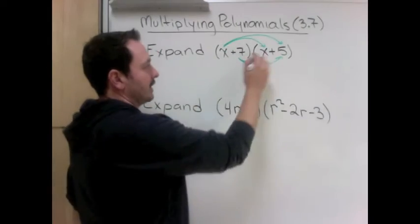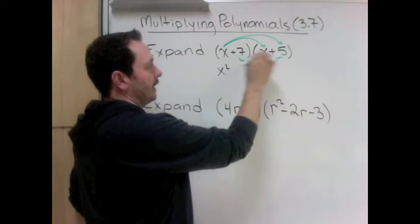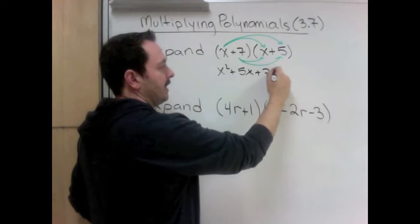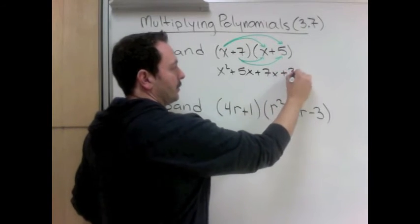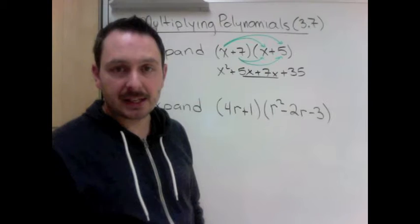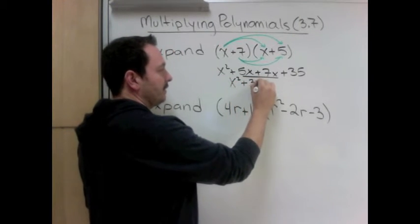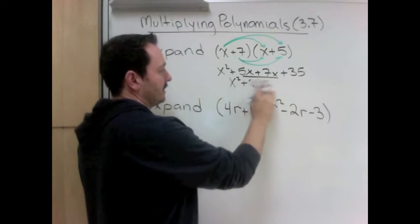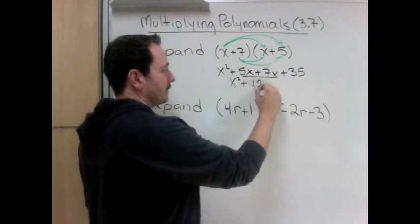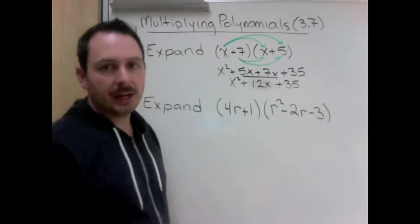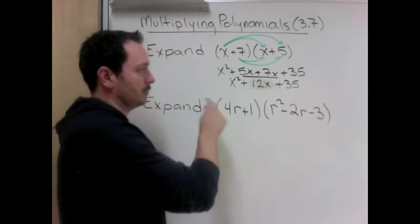And with this we'd have x times x is x squared, x times 5 is plus 5x, 7 times x is plus 7x, 7 times 5 is 35. Collect anything we have the same - the x's are the same so we end up with x squared plus 12x plus 35. A good example there of what happens when you start to rush, you make mistakes.